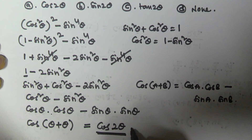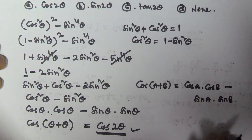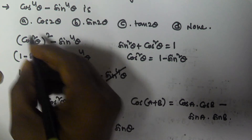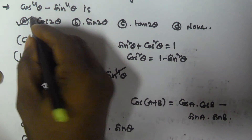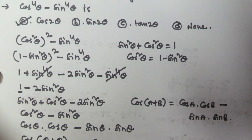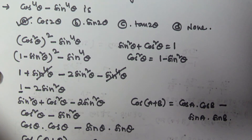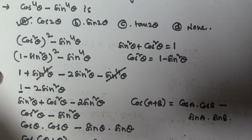So cos to the power of 4 theta minus sine to the power of 4 theta equals cos 2 theta. The correct answer is option A. I hope you got this — thank you very much for watching this video and please subscribe to my channel.